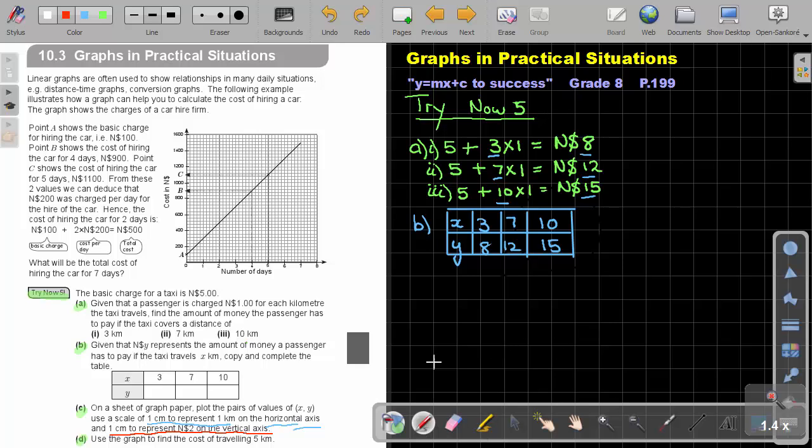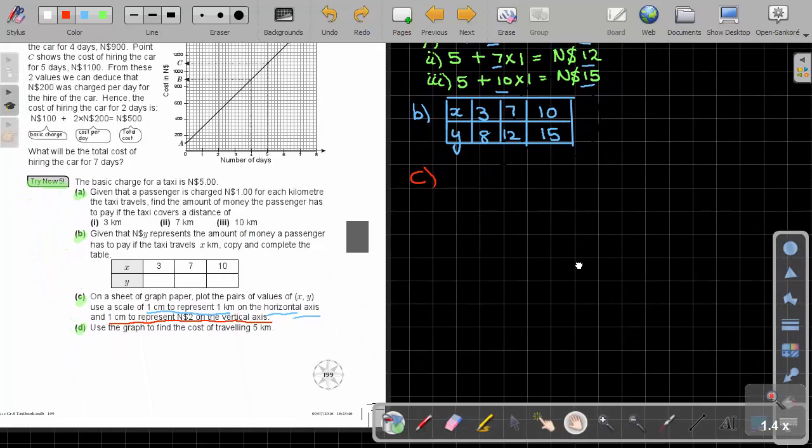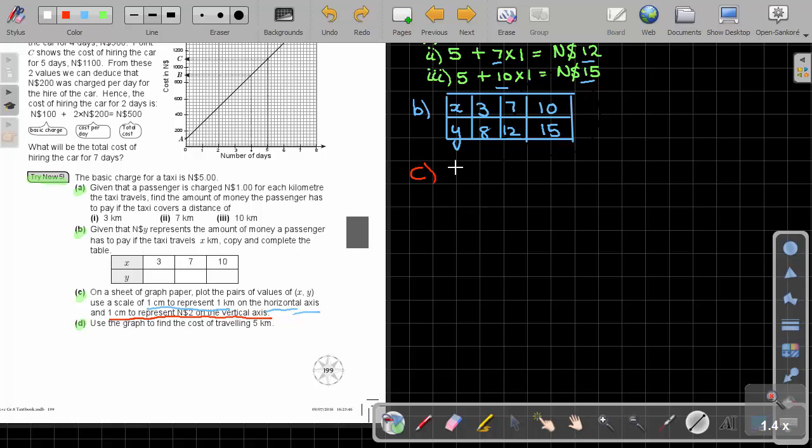So let's do number C. We're just going to use the grid, but you can use the graph paper. So basically, I'm going to draw my graph. It's just positive values. So on the vertical axis, 1 represents 2. So 1 centimeter will be 2.